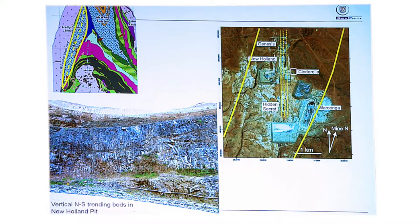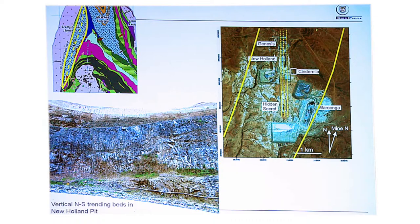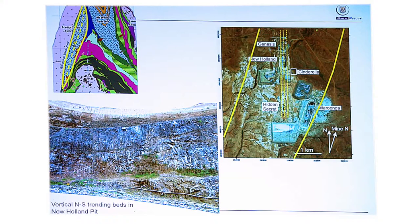Both Wurrunga and New Holland are hosted in lake basin sediments. On most maps the Scotty Creek Basin is shown as a simple north-northeast trending syncline with the axis down the middle. But on the ground you see vertical beds trending straight across that syncline axis—something that doesn't fit. Looking at the northern end of the New Holland pit, the vertical beds go straight over that syncline axis, which triggered a major mapping and re-logging exercise to work out the geometry of this basin.